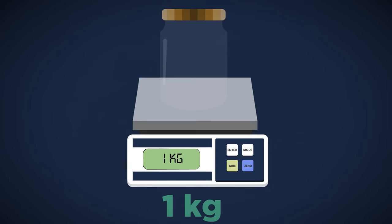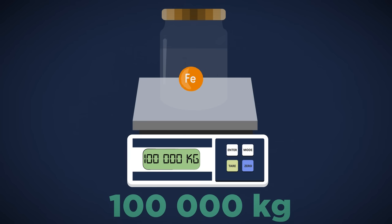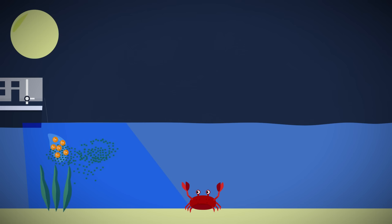Thus for each kilogram of soluble iron sulfate we add to the oceans, around a hundred thousand kilograms of carbon can be fixed because now the algae have all the minerals they need to grow.